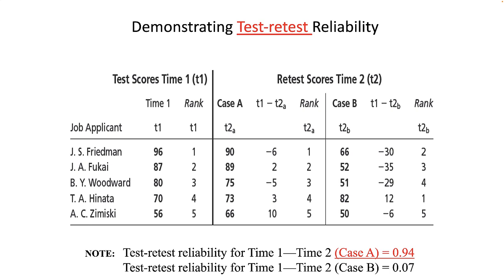Here are two hypothetical test-retest examples. At time one, Friedman and friends have scores and rankings shown in the left part of the table. In Case A, while their scores changed a little, their overall rankings did not — Friedman goes from 96 to 90, Foucaille from 87 to 89, Woodward from 80 to 75. The test-retest reliability, a Pearson correlation between scores for all five persons at two different time points, is 0.94.